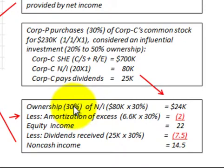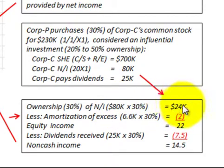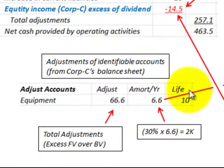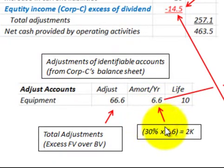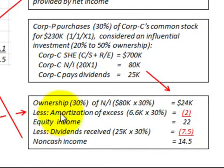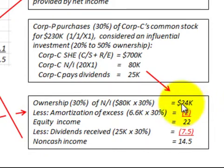Corporation P has 30 percent ownership, and corporation C had net income of $80,000, so corporation P would recognize $24,000. We then subtract the amortization of excess: the amortization amount is $6,600 per year, and corporation P's 30 percent share is $2,000. So subtracting that $2,000 amortization from the $24,000 share of net income gives an equity income of $22,000 for corporation P.